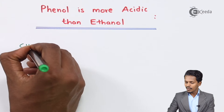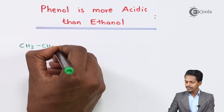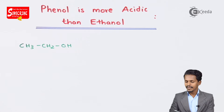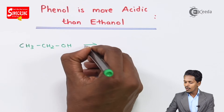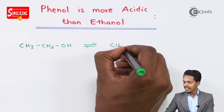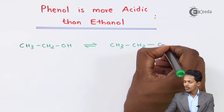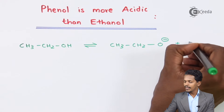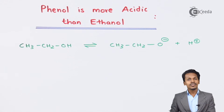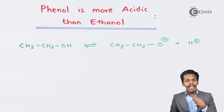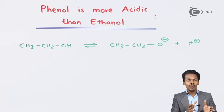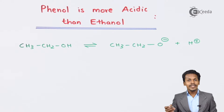Suppose I am considering Ethanol, that is CH3CH2OH. If it ionizes, it will ionize in the form of ethoxide ion, written as CH3CH2O-, along with H+. This easiness to lose H+ ion is what makes a particular molecule more acidic in nature — that was related to the ethoxide ion.